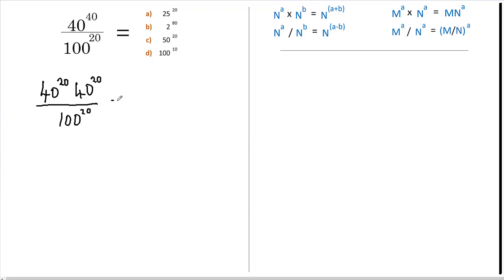So we can now rewrite this as 40 to the 20 over 100 to the 20, multiplied by 40 to the 20. When we divide two numbers raised to the same power, we can use this rule. So this becomes 40 over 100, all to the power of 20, multiplied by 40 to the 20.